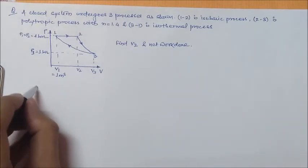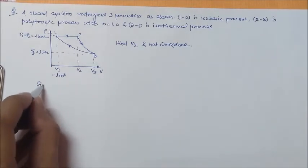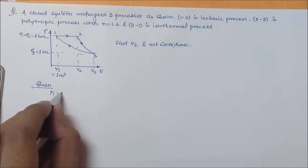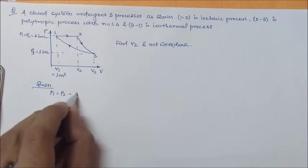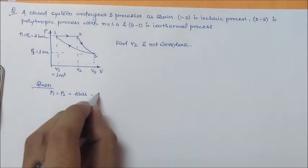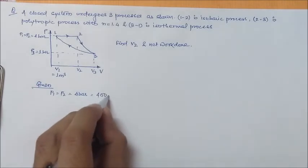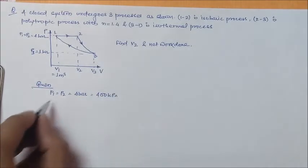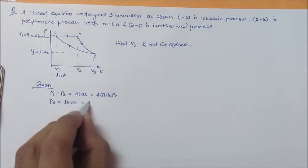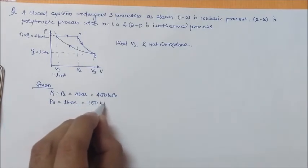So first we will write the given things. We have P1 is equal to P2 is equal to 4 bar. We will convert it into kilopascal, that is 400 kilopascal. P3 is 1 bar, it will be 100 kilopascal.